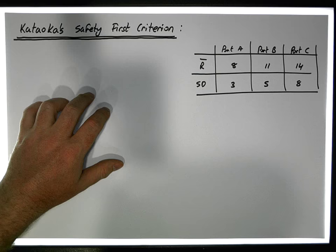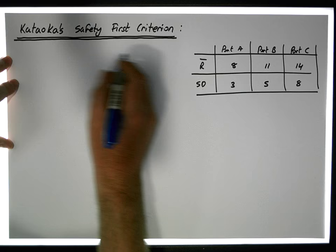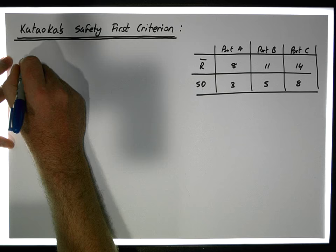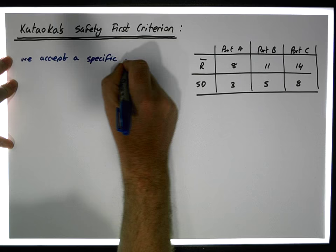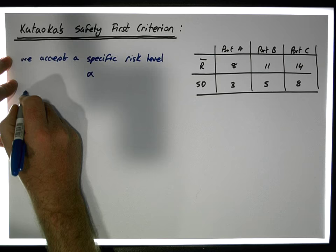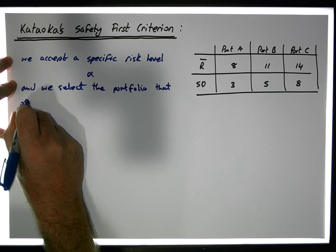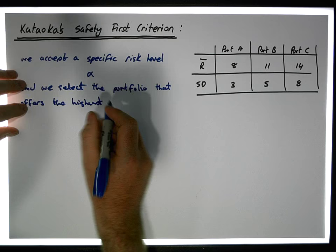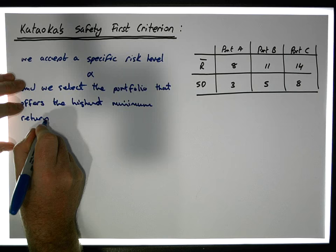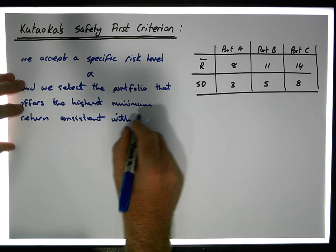So to summarize: with the Katoka Safety First Criterion, we accept a specific risk level alpha, and we select the portfolio that offers the highest minimum return consistent with that risk level.